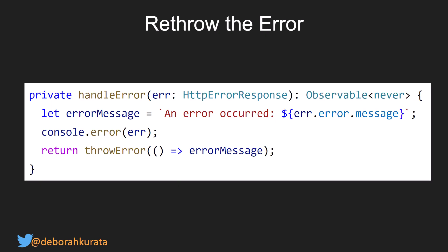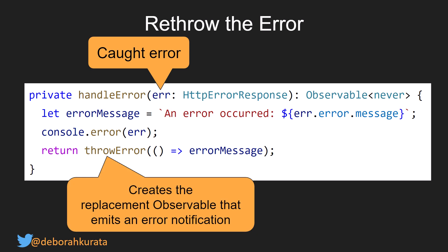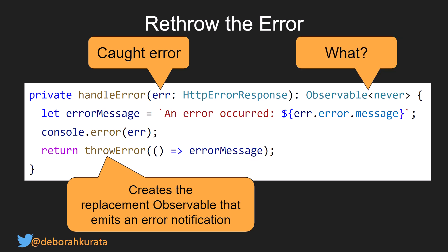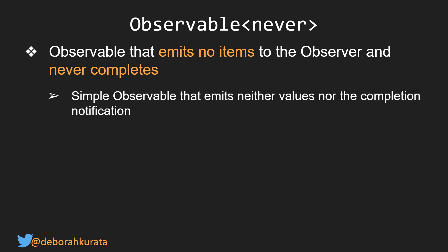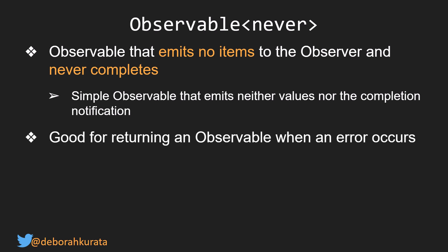To re-throw, we use a handleError method that takes in the caught error. It then creates the replacement observable that emits an error notification using throwError. Here we return an observable of NEVER. An observable of NEVER is an observable that emits no items to the observer and never completes — it emits neither values nor the completion notification. It's good for returning an observable when an error occurs, and we use it when we emit an error notification.